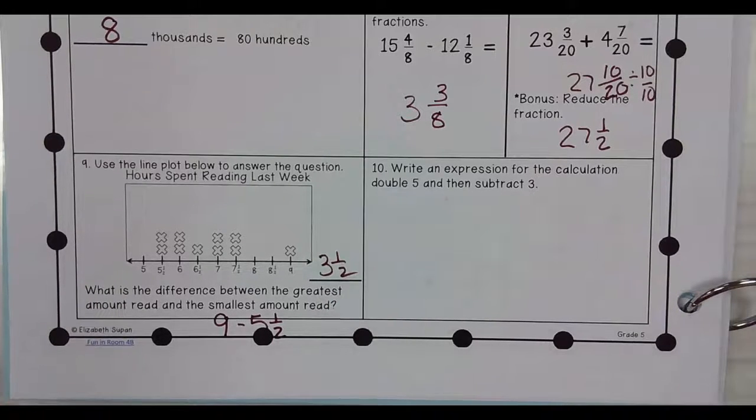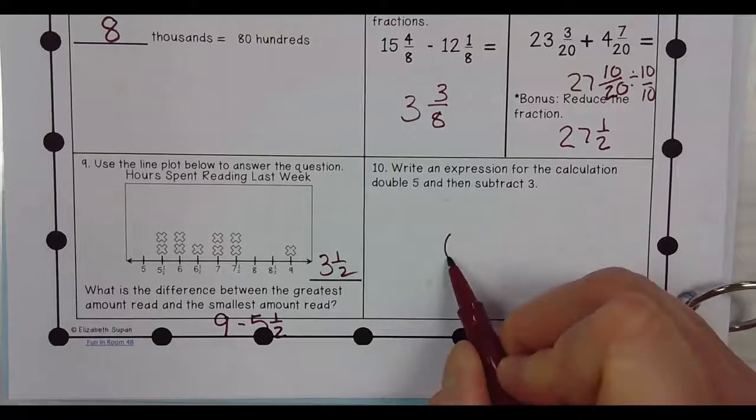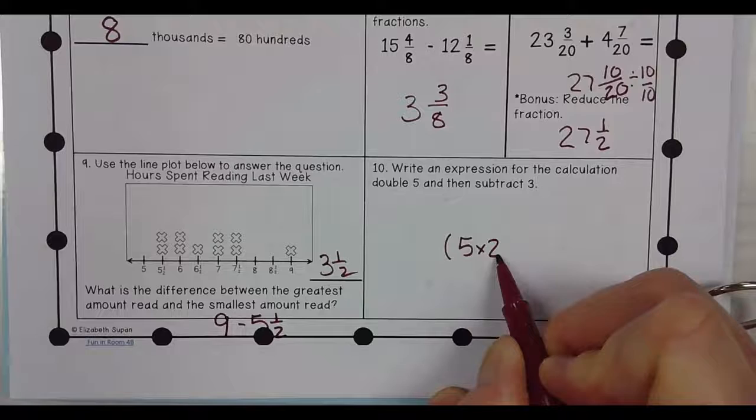Write an expression for the calculation of double 5, then subtract 3. 5 times 2 minus 3. Any questions on those?